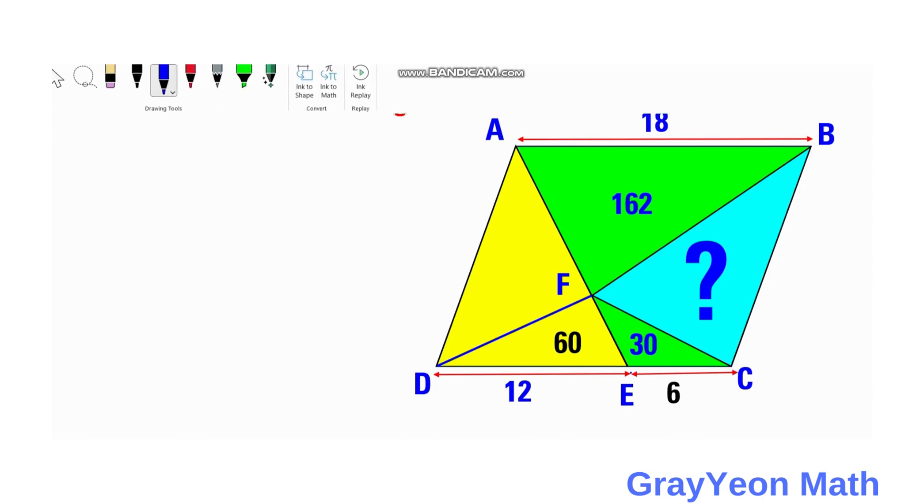So next we focus on these two triangles ABF, this triangle, and this triangle FCD, the combination of this yellow and this green triangle below, so FCD.